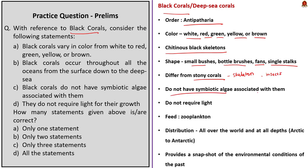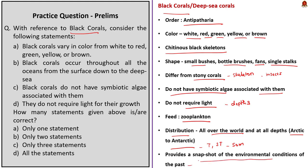Unlike stony corals, black corals do not have symbiotic algae associated with them, so they do not require light and are found in depths where light is absent. They are filter feeders, eating tiny zooplankton abundant in deep waters. Black corals are found across the globe from the Arctic to the Antarctic, particularly common in tropical and subtropical regions at depths below 50 meters, generally in areas with hard substrates, low light and strong currents. They are significant because their skeleton composition provides a snapshot of past environmental conditions. Just like trees form rings, rings form in the skeletons of these corals as they grow, capturing chemical signatures of the environment, allowing scientists to learn about past oceanic environments.